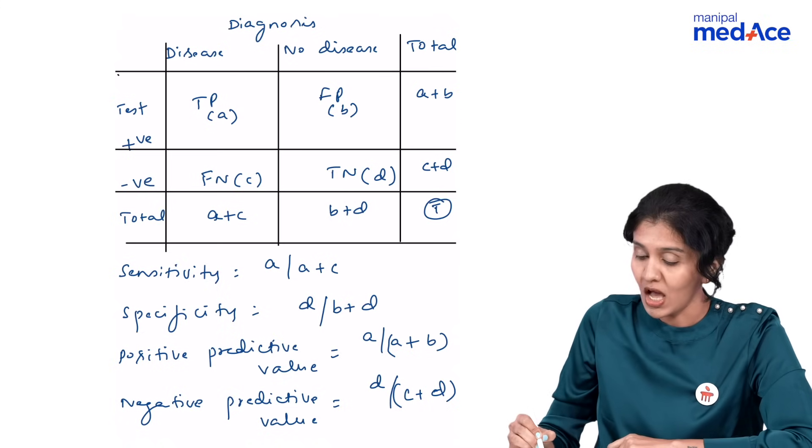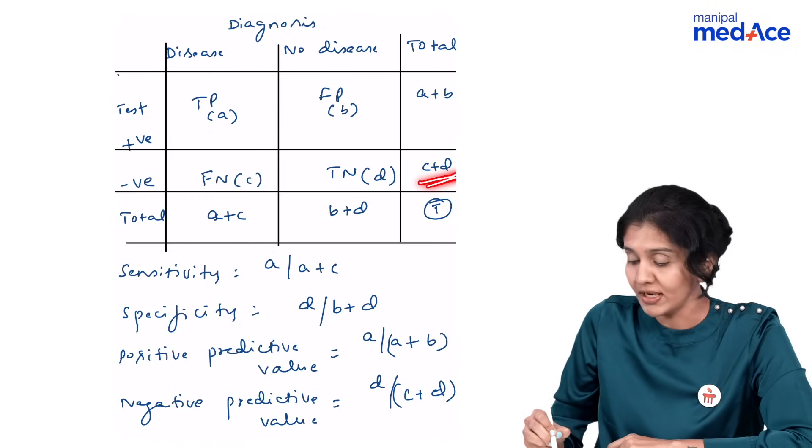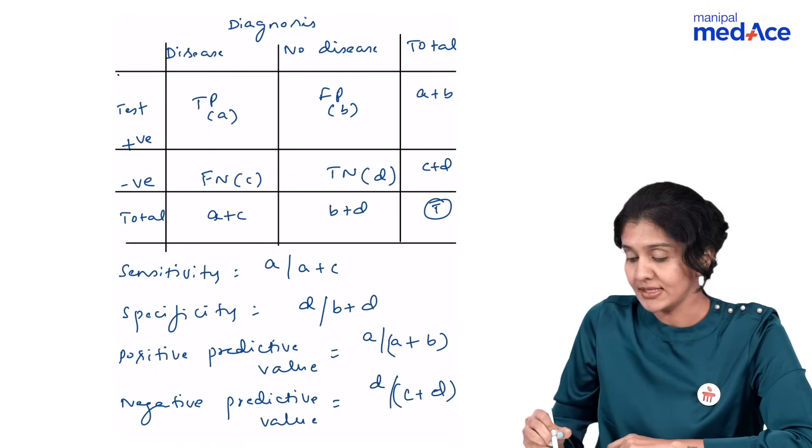What is negative predictive value? Out of the total negatives, how many truly do not have the disease? That is TN. This is what you need to know about screening and its different parameters.